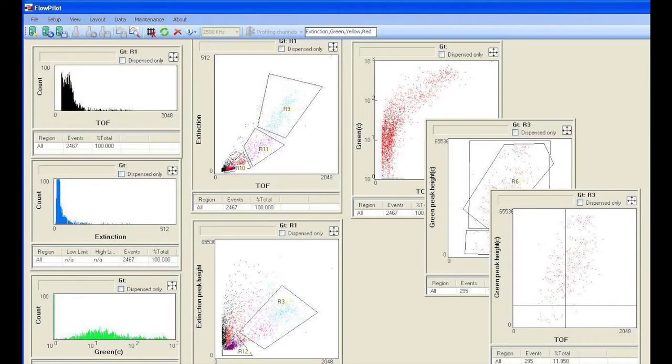Flowpilot software offers a user configurable display of key parameters including time of flight, extinction, fluorescence, histograms and dot plots with sorting gates, and overall system controls.